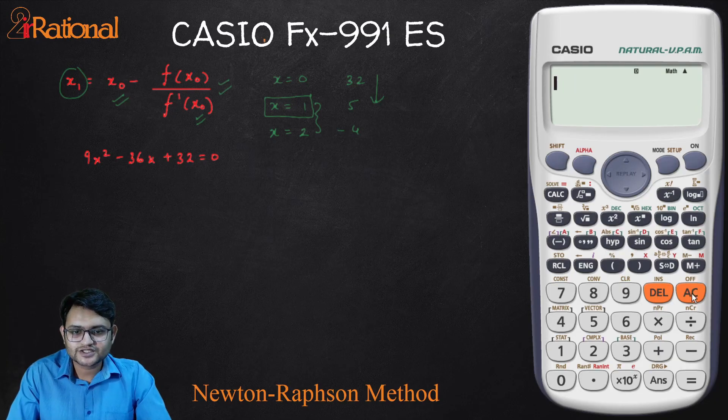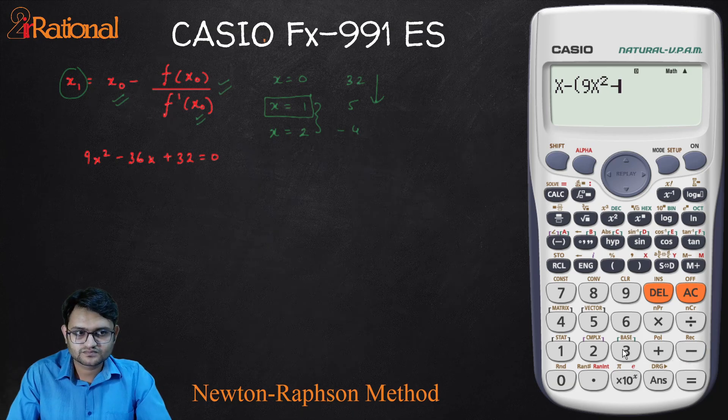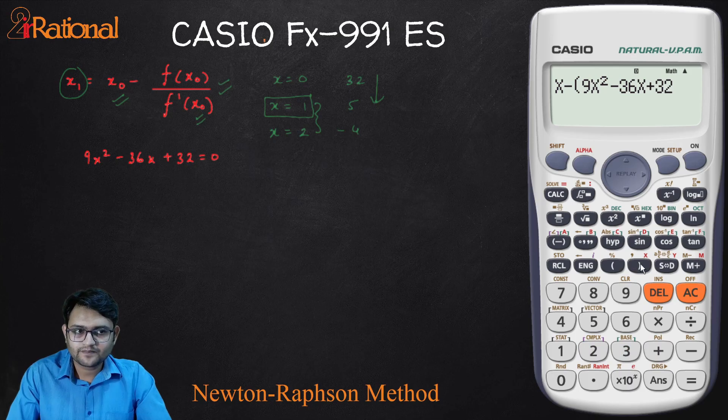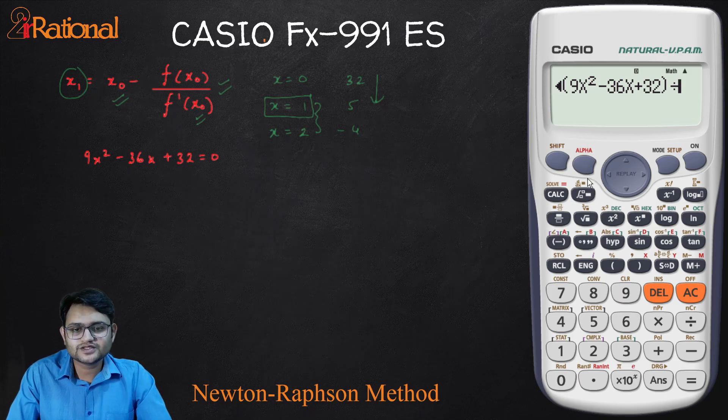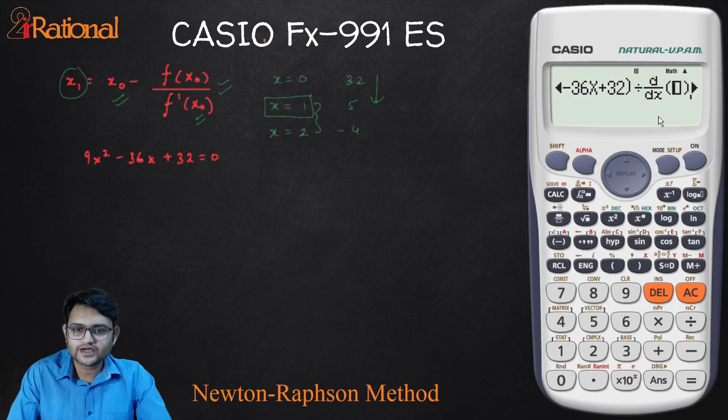Alpha x minus in bracket. First I will write this equation. Bracket close and now divide by, I want the derivative of this equation. Even if you don't know how to derivate this, no problem. There is a derivative function here itself. Press shift and this button and you can see I get a derivative. I have to first write the equation.